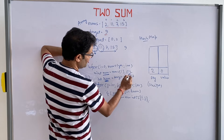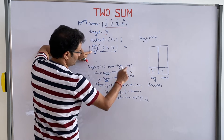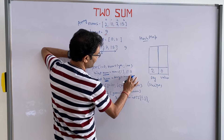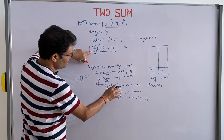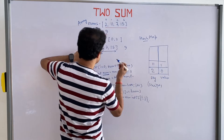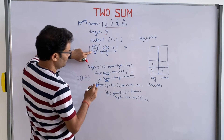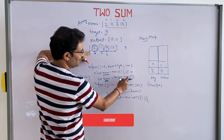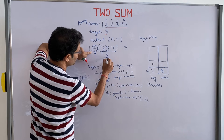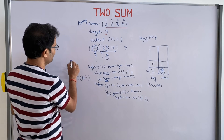Walk through the driver: first you come to 2, remaining is 7. Is 7 present in the map? No — put 2 with index 0. Move to the next element -1: the remaining is a negative number, not there — put -1 with index 1. Now come to 7: the remaining is 2. Is 2 present in the map? Yes! The index of 2 is 0. Your current i is 2. So you can return [2, 0] — indices of 7 and 2.